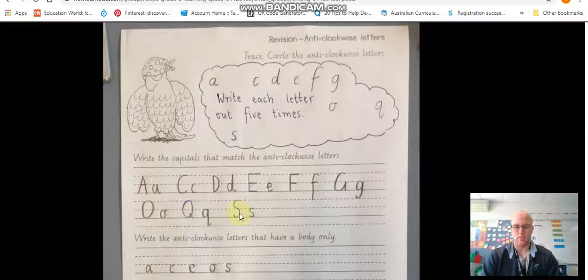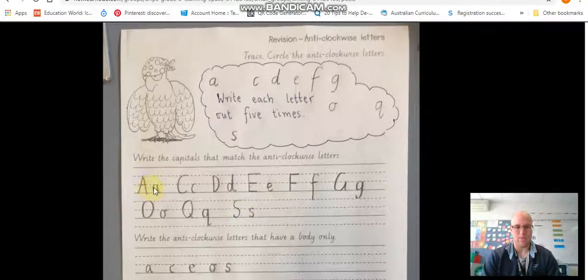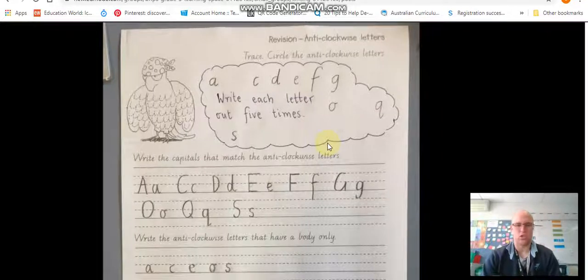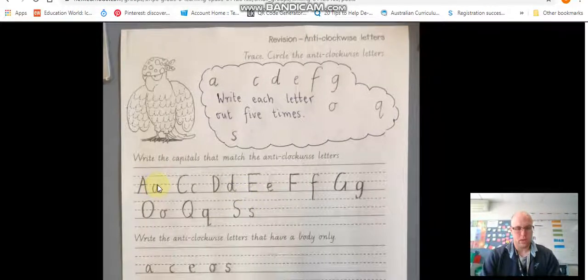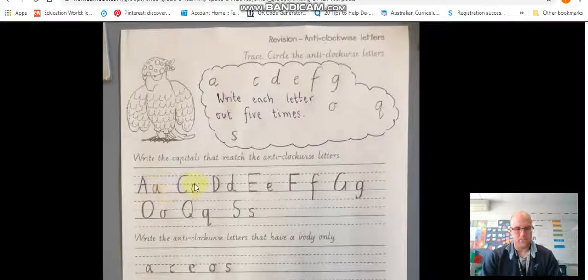So once you've done that your next job will be to write out the letters each letter and write the capital version of it as well. So you're going to write the capital and then the lowercase. A couple of letters that are really important to remember. Now there's a I guess a little trick to them. With these letters most of them start in this corner and then go that way. Like the a that way.